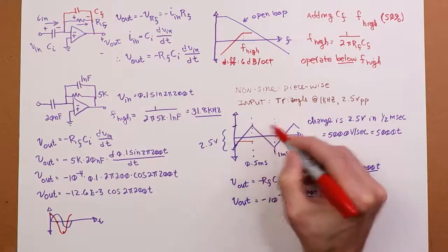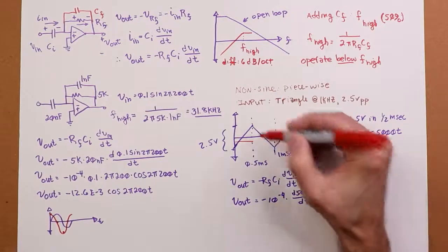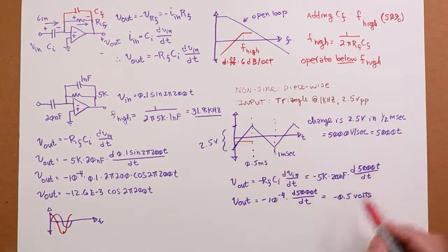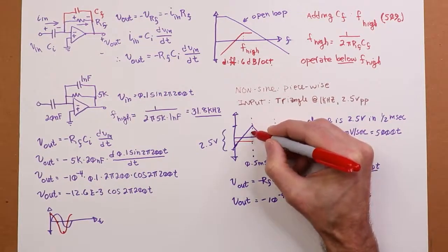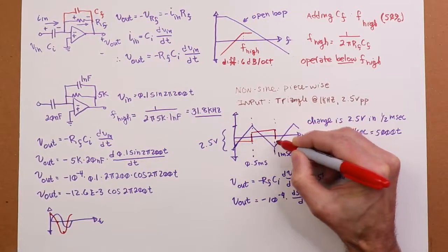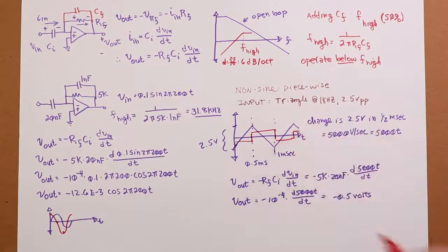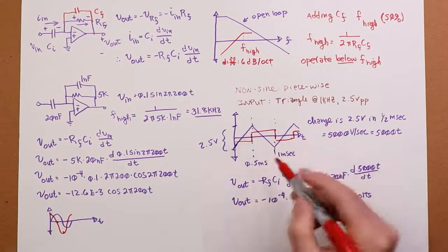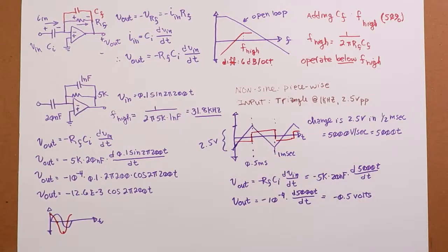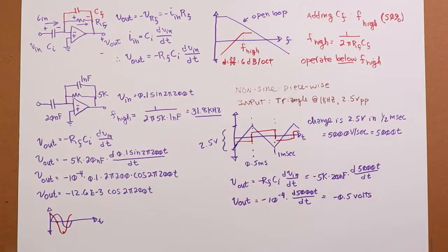Then, when we do it for this part, the only thing that changes is this turns into negative 5,000 volts per second, because you're going this way. And then we have a negative negative. This turns into a positive, so we end up with that. And obviously, there's just a little edge connecting those. So we wind up with a square wave. We put in a triangle wave, we get out a square wave.